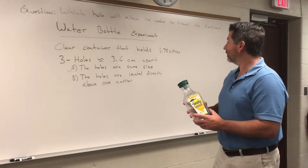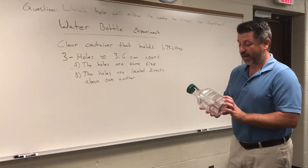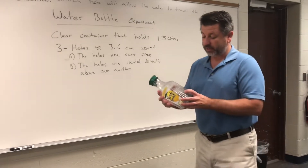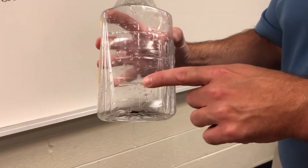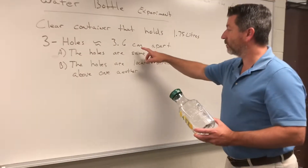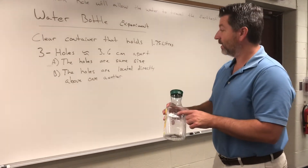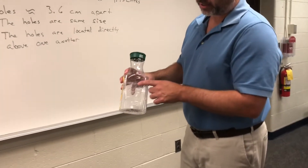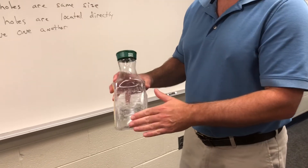This is a clear container that holds approximately 1.75 liters, and I put three holes in the side of the container. There is a hole here, a hole here, and a hole right here. Those three holes are approximately 3.6 centimeters apart. They are all the same size and are located all in a straight line, on top of each other. I'm now going to put a piece of tape over the holes.